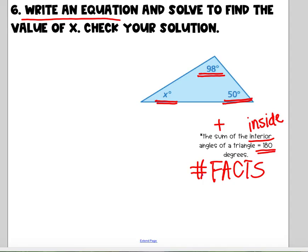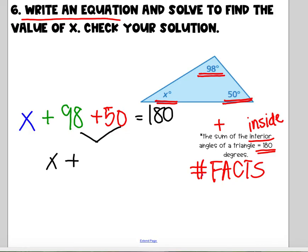So I'm going to write an equation. If it says write an equation, you better write an equation. Angle 1, x, plus angle 2, 98 degrees, plus angle 3, 50 degrees, is equal to 180. Now let's solve. What do you think I should do first? x plus 98 plus 50. Let's combine these like terms. x plus 98 plus 50 is 148 equals 180.